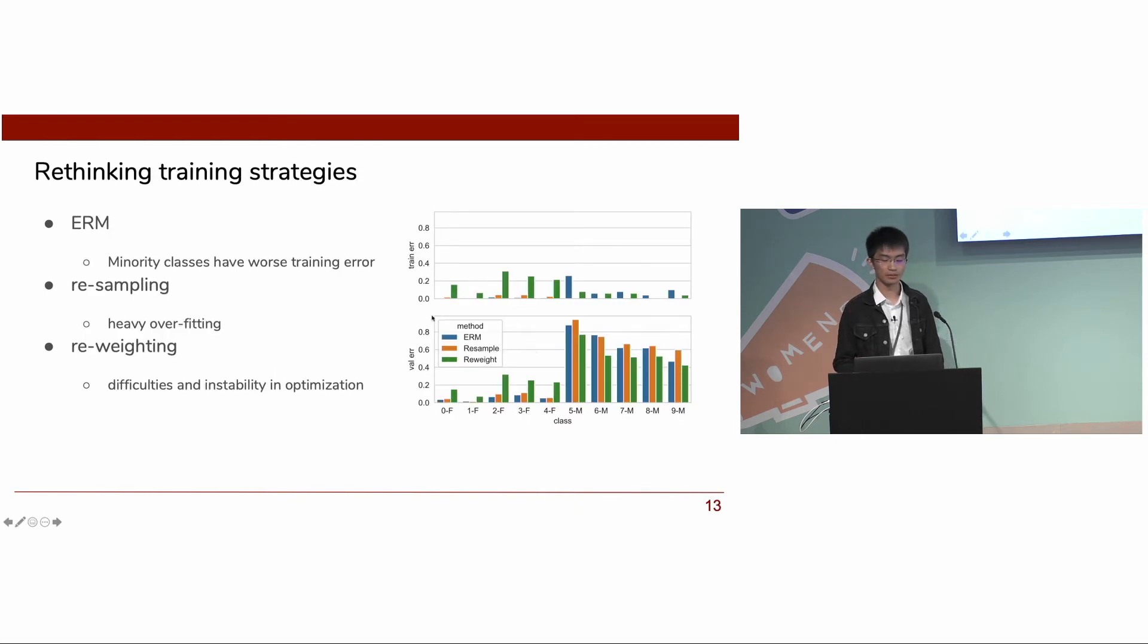In addition to the proposed loss function, we also notice that existing training strategies are not ideal yet. Basically, for standard ERM, we see that minority classes will have worse training and test errors. Resampling has overfitting issues as we just showed. We also consider reweighting here. Reweighting refers to weighting up the loss of minority classes.